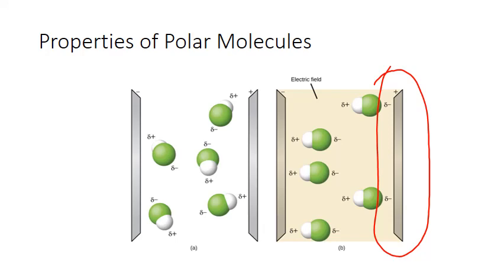And all the partial positive ends will be pointing to the negative electrode. In a more common everyday implication, polar substances are also much more likely to be found in condensed states like liquids and solids at higher temperatures. This is because the partial positive and negatives on separate molecules attract each other and stick together. These are called intermolecular attractions and are a major topic in Chapter 11 looking at solids and liquids.